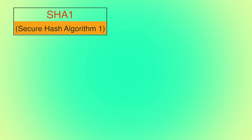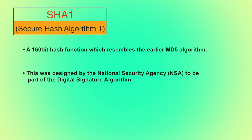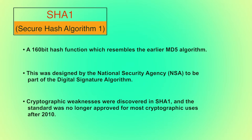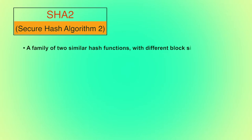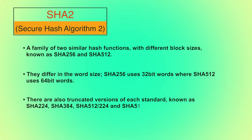SHA-1 stands for Secure Hash Algorithm 1. After the collision attack in MD5, SHA-1 was discovered. It generates a 160-bit hash value and was designed by the National Security Agency (NSA) as part of the Digital Signature Algorithm. Some cryptographic weaknesses were discovered in SHA-1, which is why it was no longer approved for most cryptographic uses after 2010. SHA-2 (Secure Hash Algorithm 2) is a family of two similar hash functions with different block sizes: SHA-256 and SHA-512. SHA-256 uses 32-bit words while SHA-512 uses 64-bit words. Truncated versions include SHA-224, SHA-384, and SHA-512/224, all designed by the NSA.